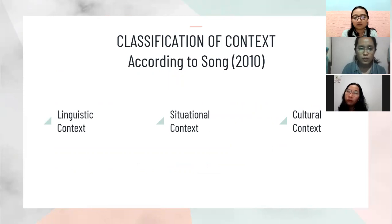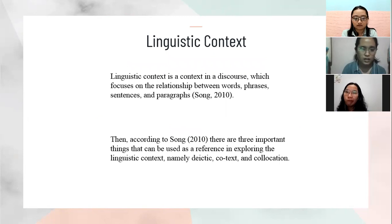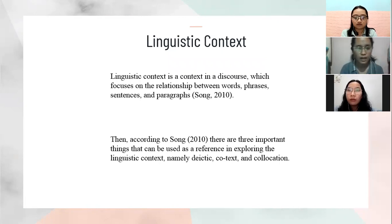There are three classifications of context according to Song (2010): the first is linguistic context, the second is situational context, and the last is cultural context. Linguistic context is a context in discourse which focuses on the relationship between words, phrases, sentences, and also paragraphs, according to Song (2010). Understanding the meaning of vocabulary using a linguistic context may involve a syntactic and morphological interpretation process of the elements contained in a text.